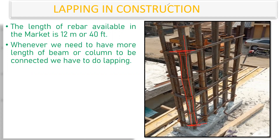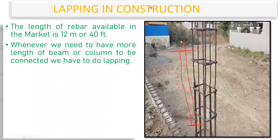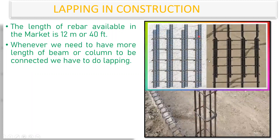Now the question is: how much lap length do we need to keep? You can see practically how it is done. From the bottom, one bar has come, and from the top they have given a lap with a crank — meaning a bend. Always remember: whenever you do lapping, the top bar must be given a crank (bend), while the bottom bar goes straight.